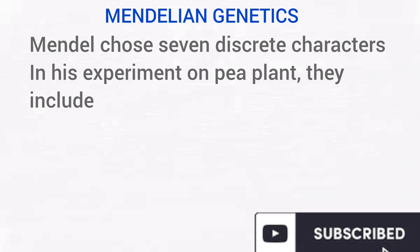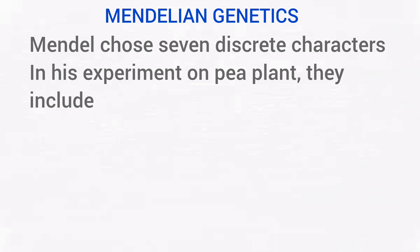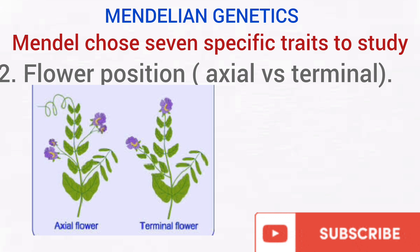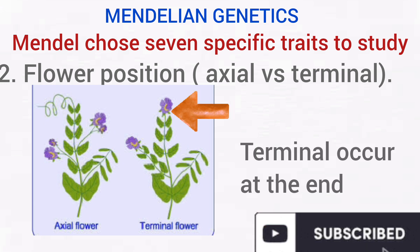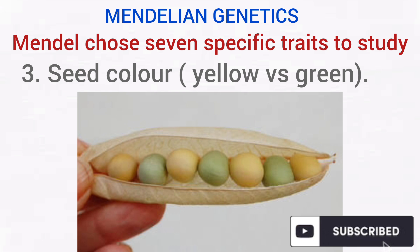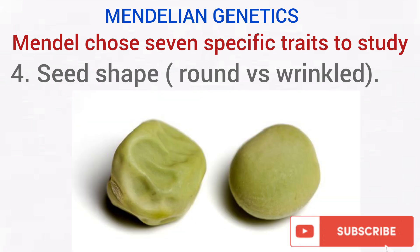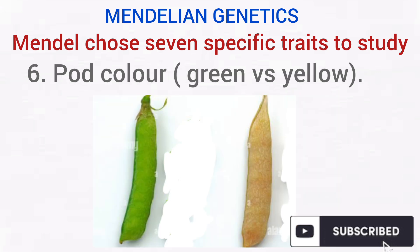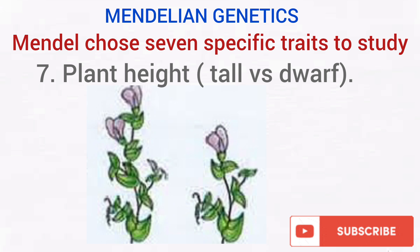In Mendelian genetics, Mendel chose seven discrete characters in his studies. These include: the color of the pea plant flower, which can be white or purple — with purple being dominant; the flower position, which can be terminal or axial; the seed color, which can be yellow or green; the seed shape, which can be rounded or wrinkled; the pod shape, which can be inflated or constricted — with the seed present inside the pod; the pod color, which can be green or yellow; and the plant height, which can be tall or dwarf.